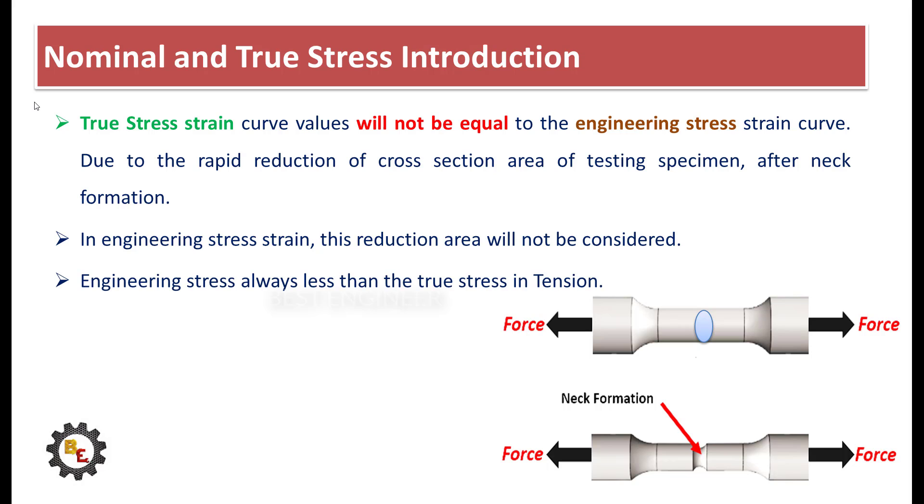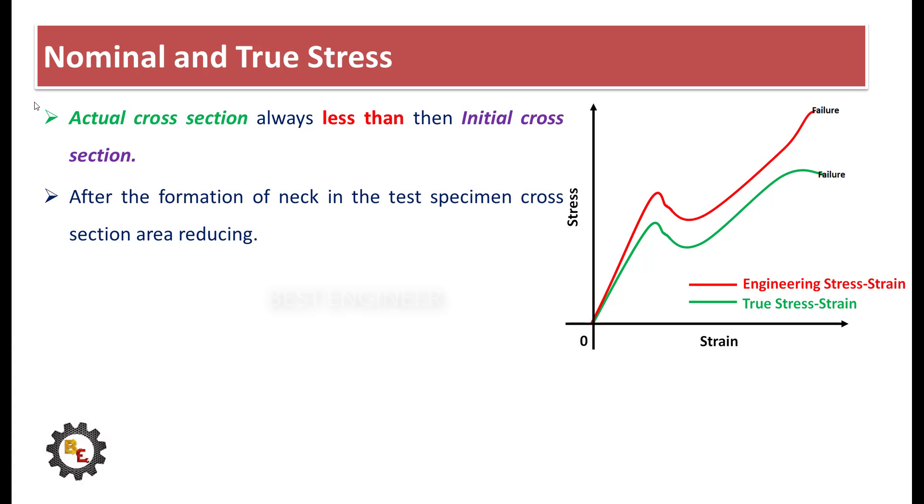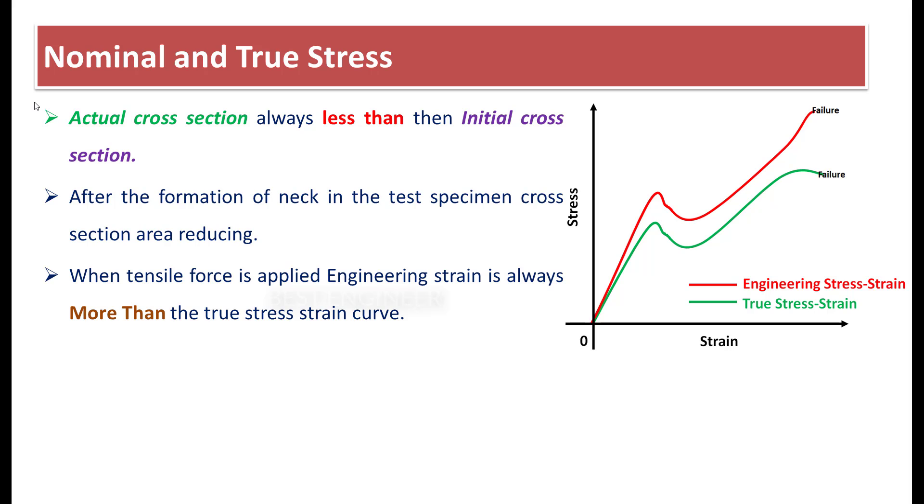Engineering stress is always less than the true stress in tension load. The actual cross-section is always less than the initial cross-section. After the formation of the neck in the test specimen, the cross-section area will be reduced. When a tensile force is applied, engineering strain is always more than the true stress strain curve.